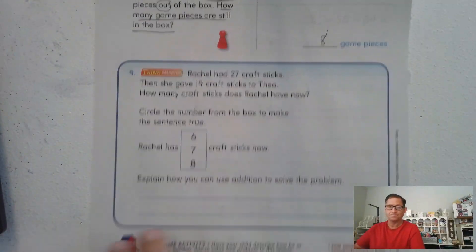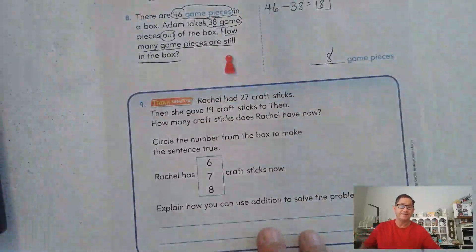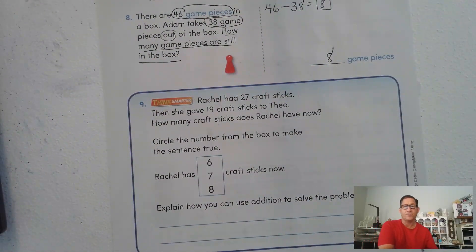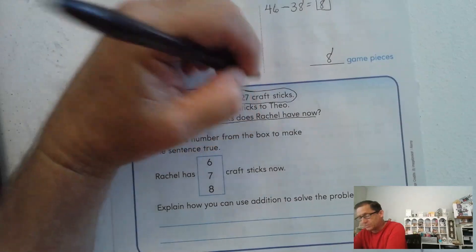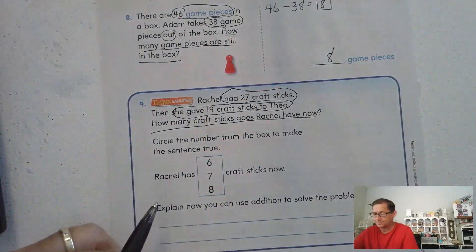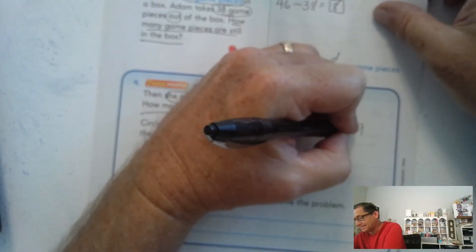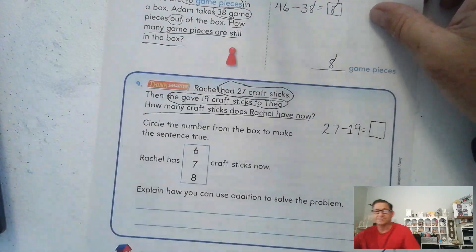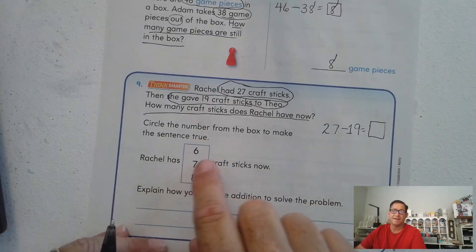And number 9. Rachel had 27 craft sticks. Then she gave 19 craft sticks to Theo. How many craft sticks does Rachel have now? So let's underline the question. How many craft sticks does Rachel have now? She had 27. She gave 19 to Theo. So if we were doing this, we would say 27 minus 19 equals the number she still has left.